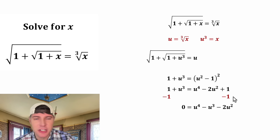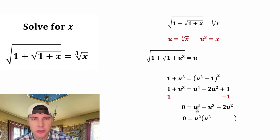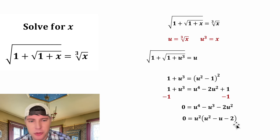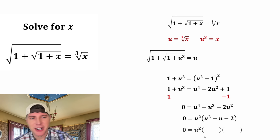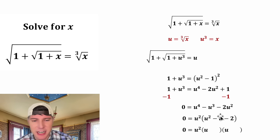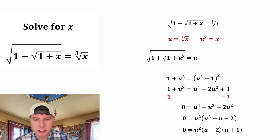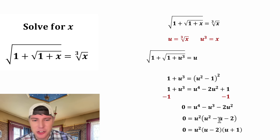We can factor out u squared from each of these terms. u squared times u squared gives us u to the fourth, then we subtract u squared times u which gives us u cubed, and subtract u squared times 2 which gives us 2u squared. So we've factored out the u squared. Then we can factor the remaining trinomial using u and u, and we need two numbers that add to negative 1 and multiply to negative 2 — that's negative 2 and positive 1.